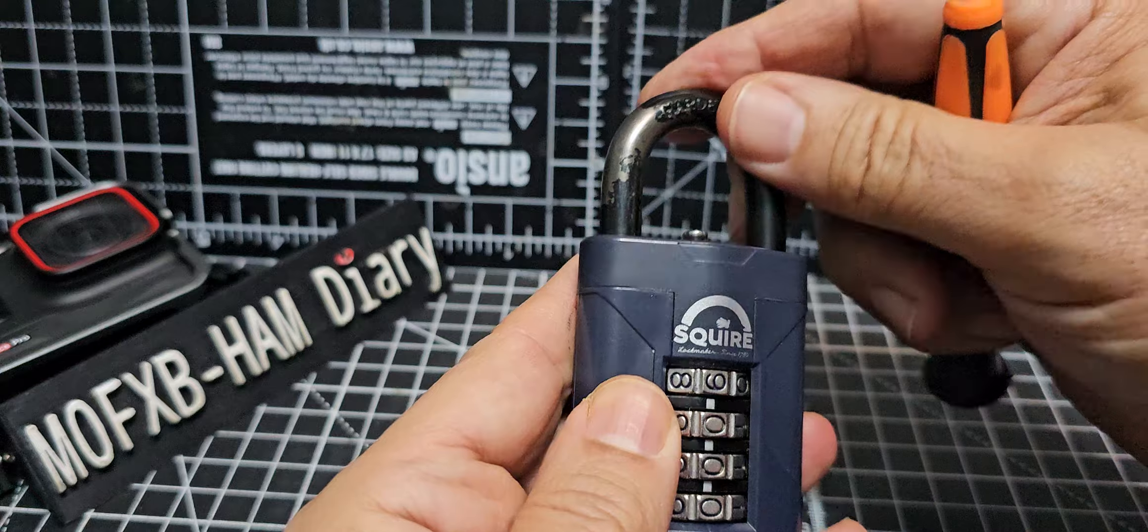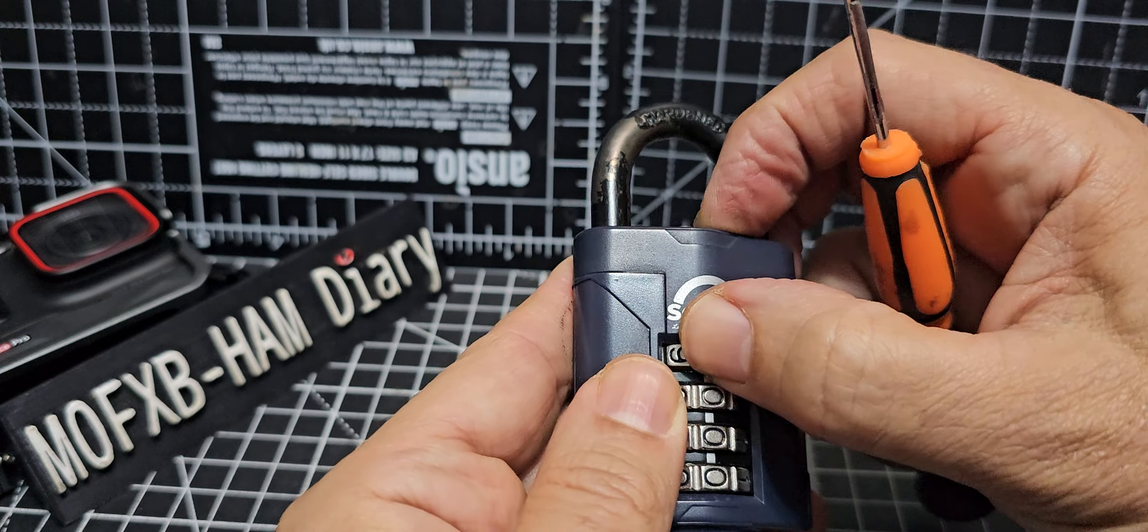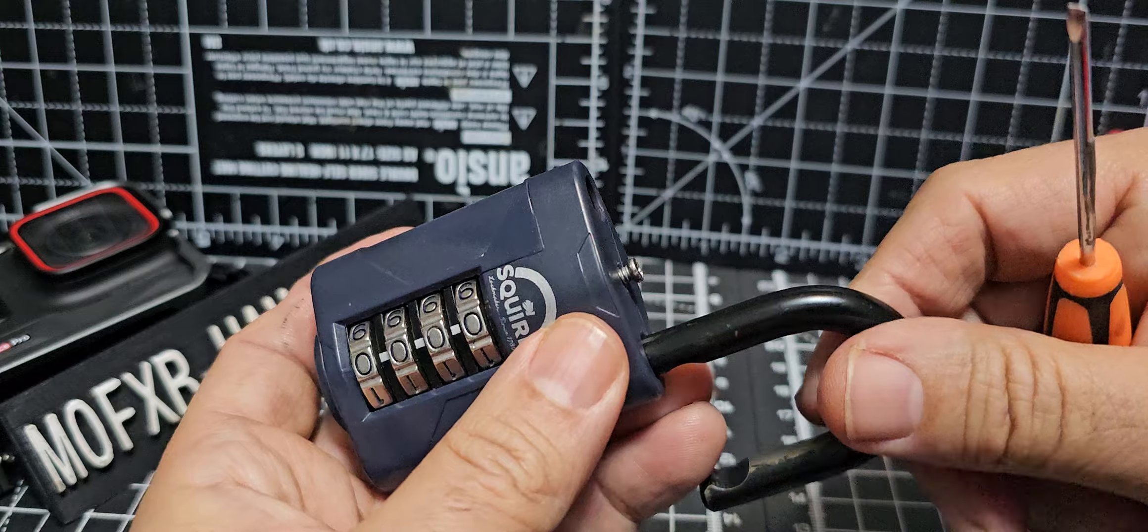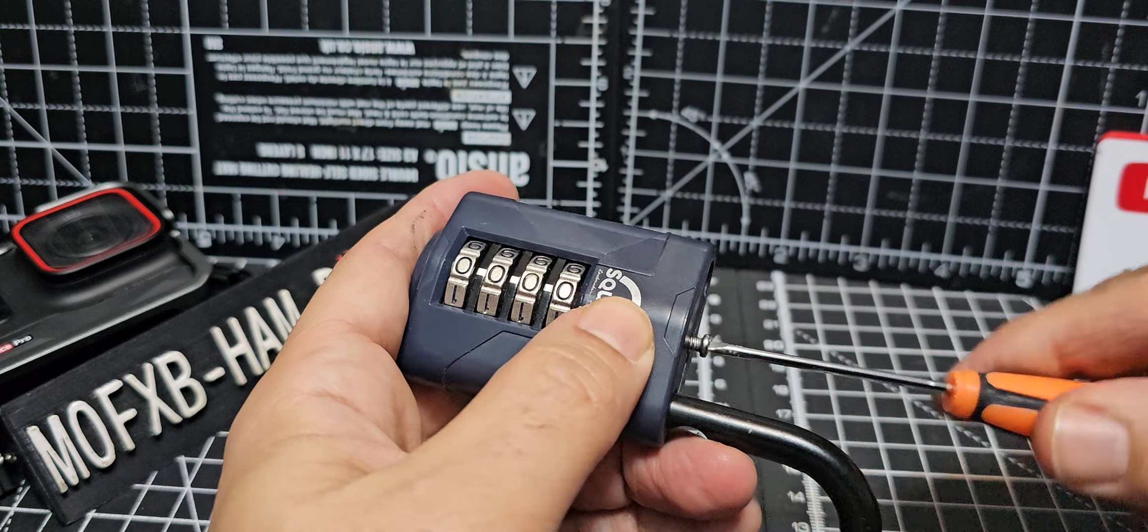If you turn a number, it won't open. So go to zero and then press - it opens. When it opens, take this screw out.